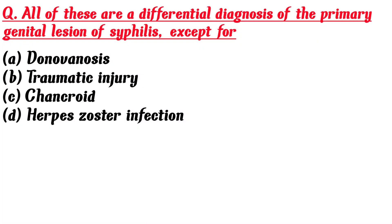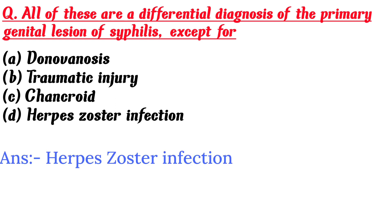All of these are a differential diagnosis of the primary genital lesion of syphilis except for: A. Donovanosis, B. Traumatic injury, C. Chancroid, D. Herpes zoster infection. Answer is D. Herpes zoster infection.